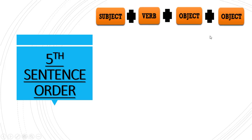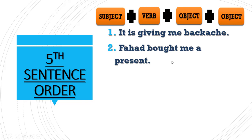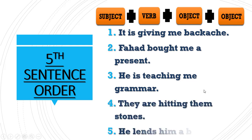The fifth sentence order is subject plus verb plus direct object plus indirect object. Examples: 'Fahad bought me a present,' 'He is teaching me grammar' — 'he' is subject, 'teaching' is verb, 'me' is indirect object, 'grammar' is direct object. We will be discussing direct and indirect objects in our coming classes.